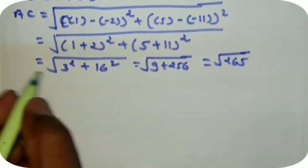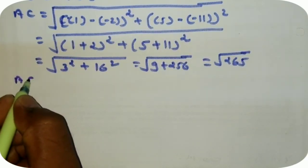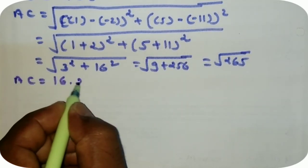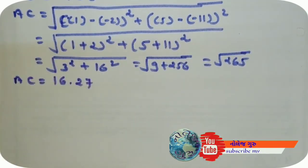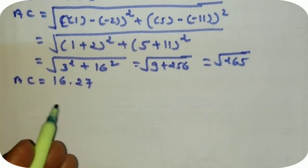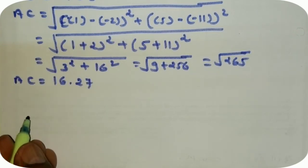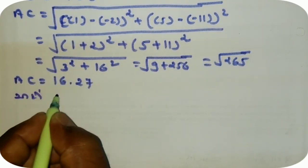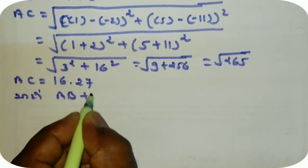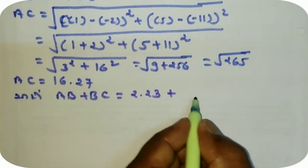હસ, મે સંખ્યા છે. પણ આ આઠ નું વર્ગ 4 point 77 sar છે. ધ્યાન આપો: આ સૂત્ર, કે જો ત્રણ બિંદુ OAB સમરેક હોય, તો નાની બાજુ શોધી કઢ્યા. a, b, c — AB ની કિંમત આ પ્રે 2.23, વત્તા BC ની.